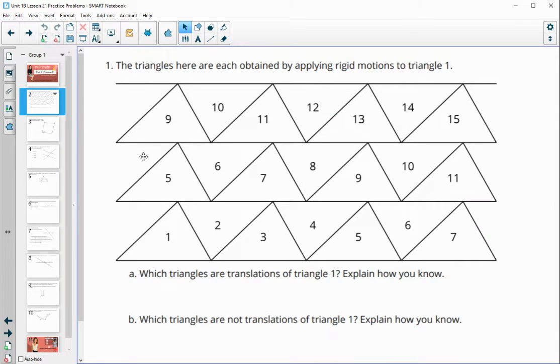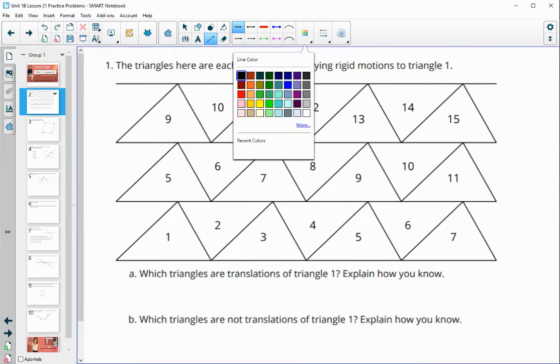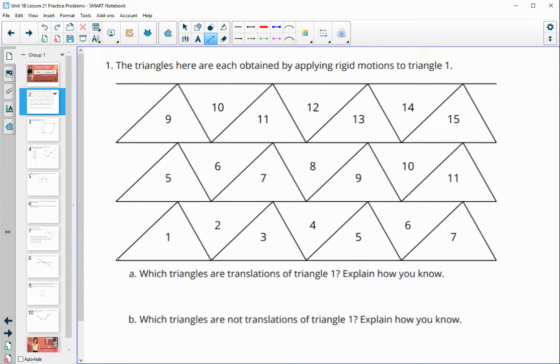So number one asks us to look at these triangles here. They're obtained by applying rigid motions to triangle number one. So let's draw in triangle number one here. And so they are asking us a couple different questions here.